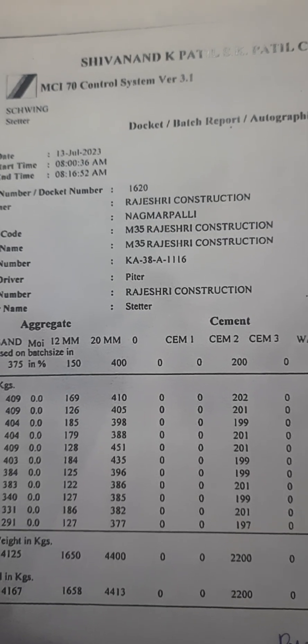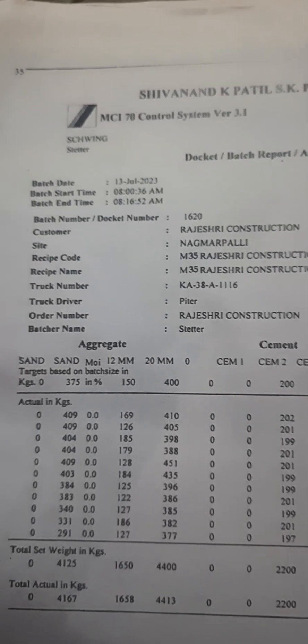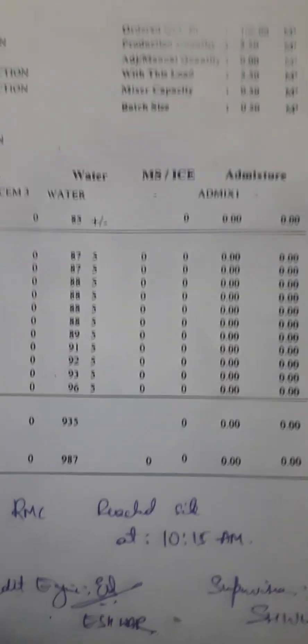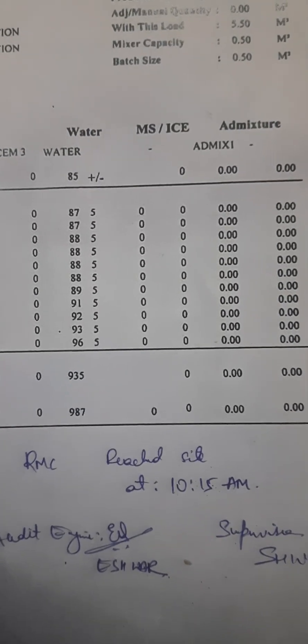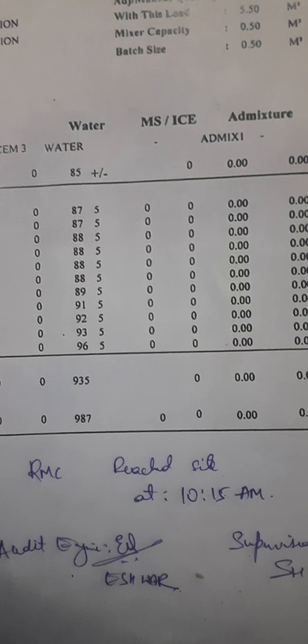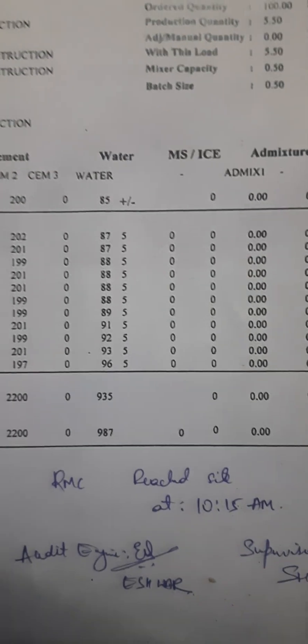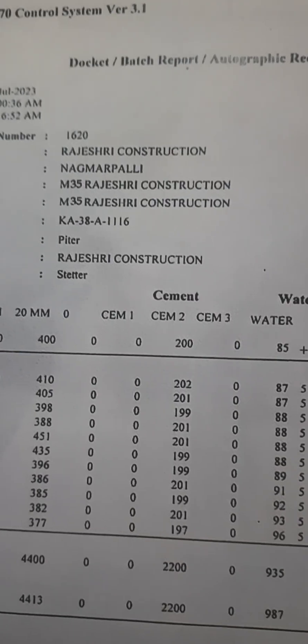Check the truck number given in the batch report to confirm it matches the truck delivered to your site. Then note the time the RMC reached your site — here it reached at 10:15 AM, which is two hours after the batch time, leaving only half an hour before the setting begins.